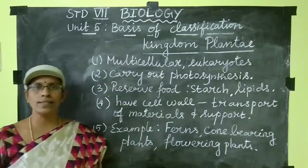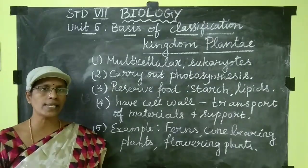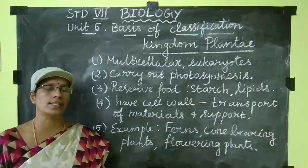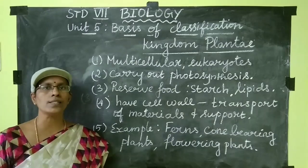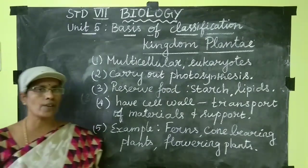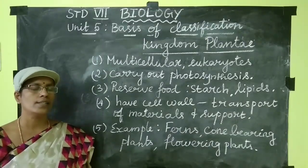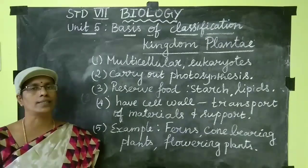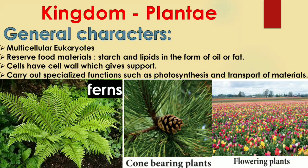Kingdom Plantae: plants are multicellular and eukaryotic — they have a well-defined nucleus and membrane-bound cell organelles. They carry out photosynthesis and produce their own food. Reserve food materials are stored in the form of starch and lipids (fat or oil). They have a cell wall and specialized functions such as photosynthesis, transport of materials, and support. Kingdom Plantae includes ferns, cone-bearing plants like Cycas and Pinus, and flowering plants.